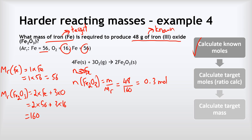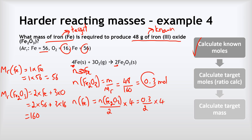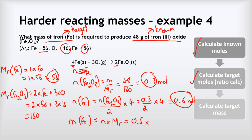Now the ratio calculation: the number of moles of Fe equals the number of moles of Fe2O3 divided by 2 — because there are two Fe2O3's in the equation — multiplied by 4 — because there are 4 Fe's in the equation. So 0.3 divided by 2 multiplied by 4 gives 0.6 moles of Fe. Finally, mass equals n times Mr: 0.6 multiplied by 56 gives a final answer of 33.6 grams.